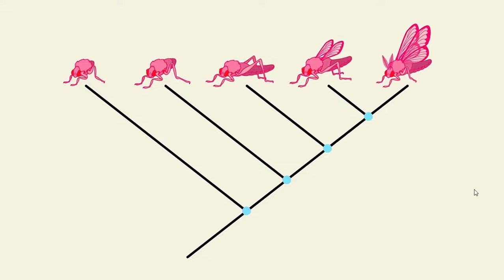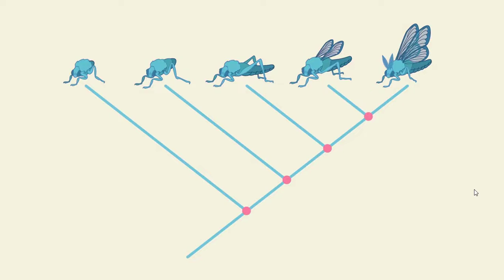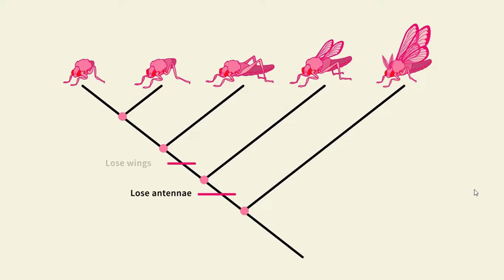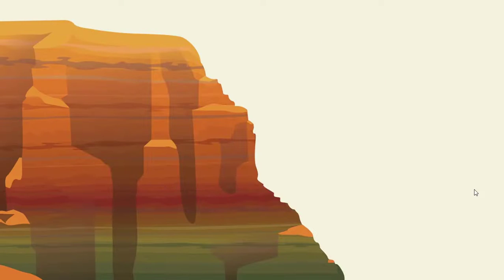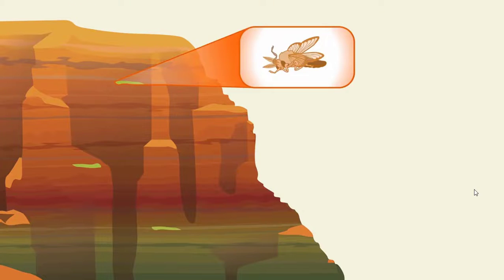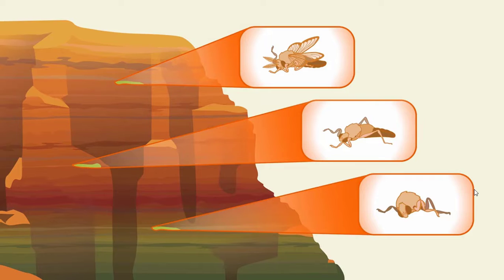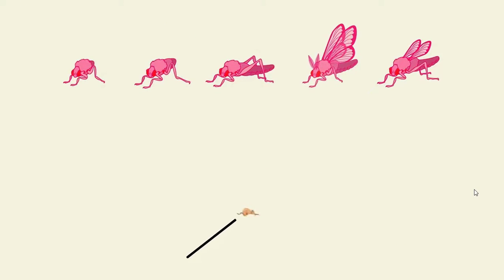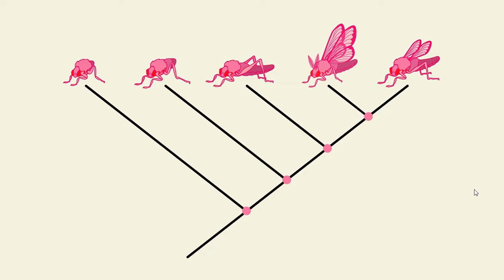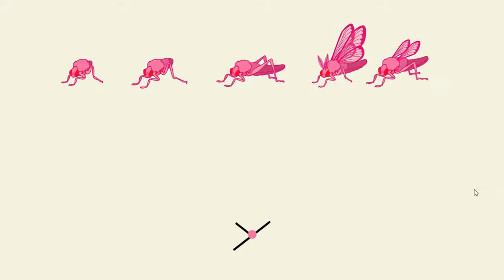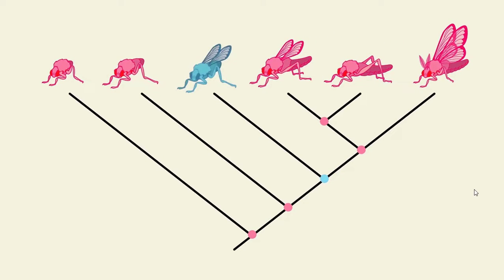Another thing to call out is that we made an assumption when we drew our tree — we assumed that the lineages evolved from simple to complex. But we could have just as easily drawn our tree with each branch point representing the loss of a trait. How do we know which one is more likely? Well, fossils could give us more information. Say we found a whole series of fossils in layers of rock, and the oldest one at the bottom was the simplest — that evidence would suggest the first way we drew the tree was correct. Because tree diagrams are hypotheses, a best guess at evolutionary relationships based on available evidence, they may be redrawn when new evidence comes to light.